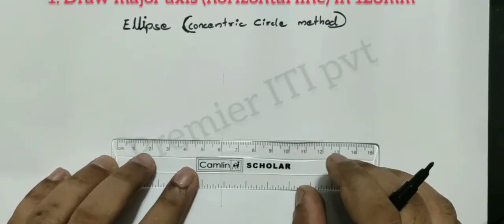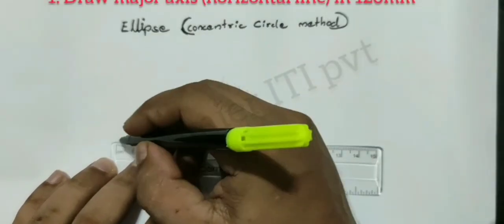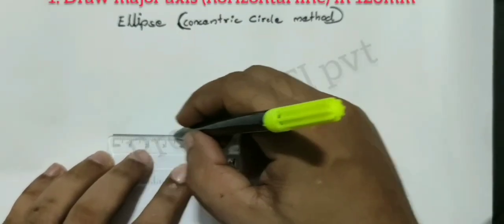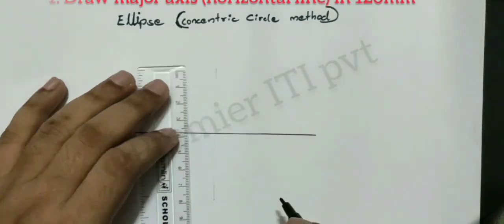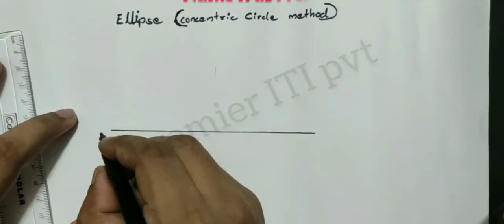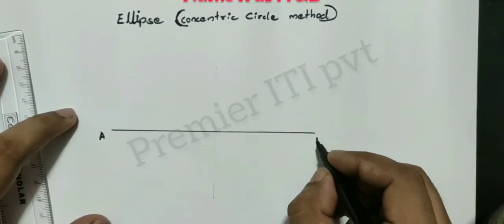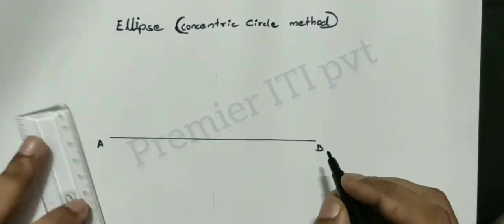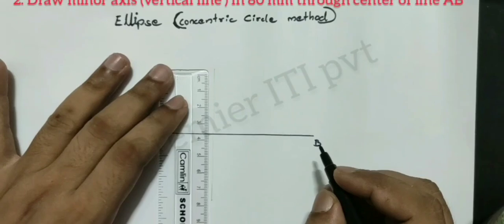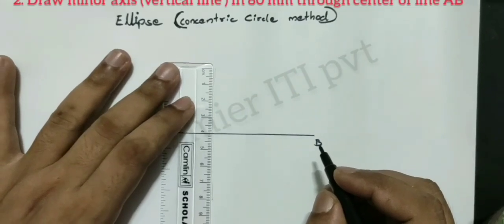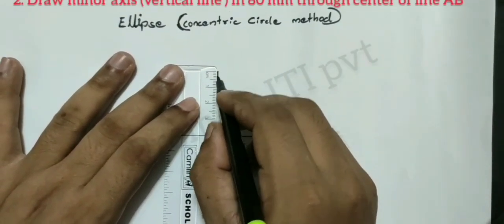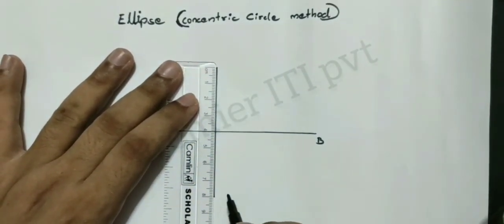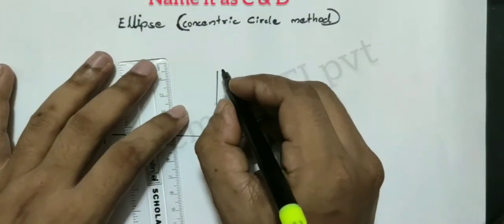This is A-B, the Major Axis. This is the Minor Axis, which is the vertical axis, labeled C-D.